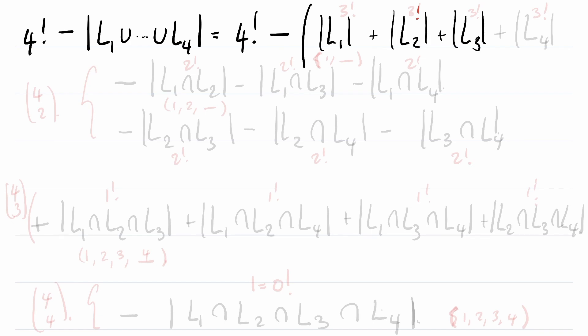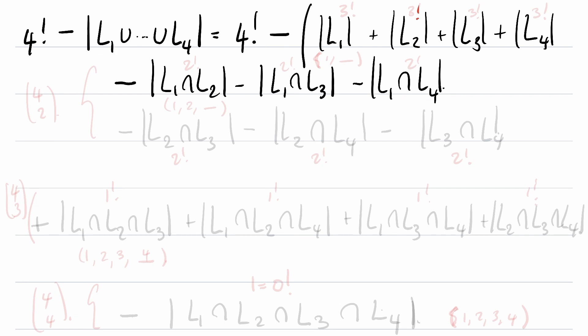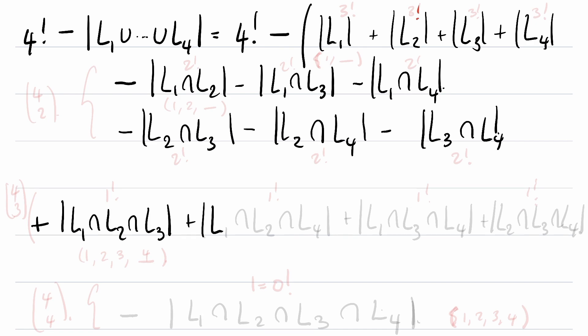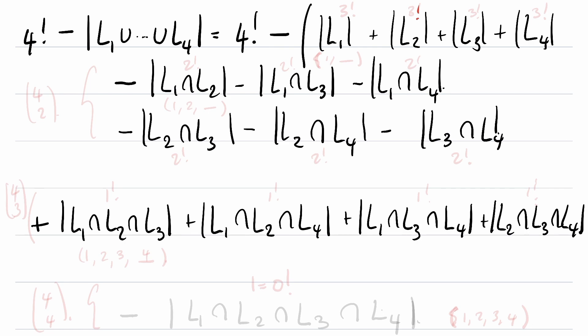Continuing the expansion: minus the cardinalities of the pairwise intersections, plus the cardinalities of the triple intersections, and finally minus the cardinality of the intersection of all four sets.